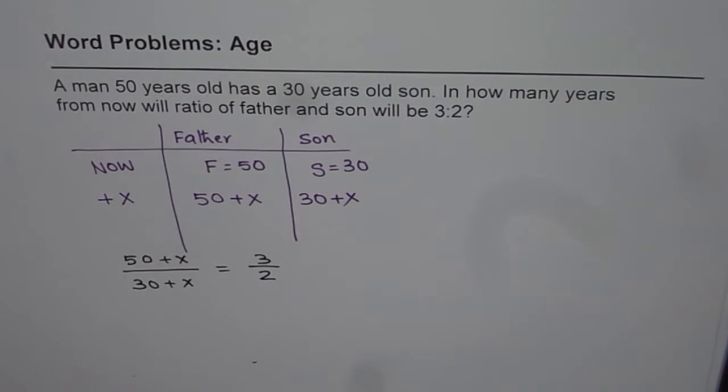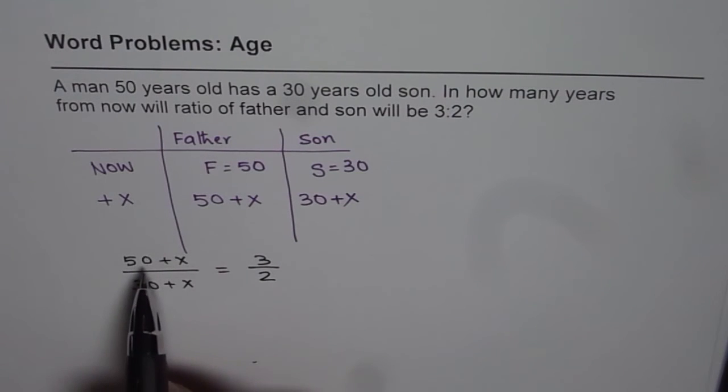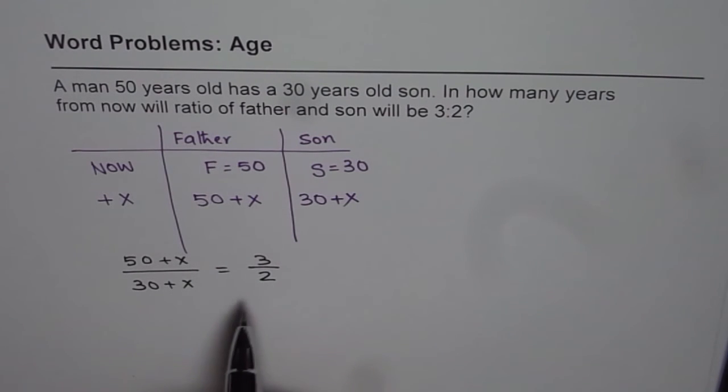That is the relation we are looking for. In this equation, the only variable is x, which gives the number of years from now, which is the required answer. We can solve this by cross multiplying.